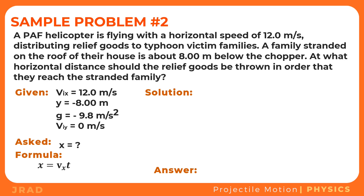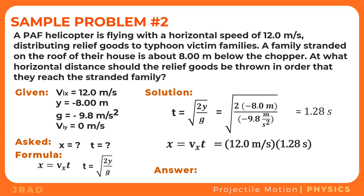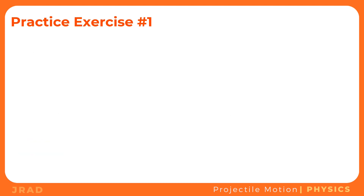To solve for x, we first need to find time using the same equation from sample problem one: t equals the square root of 2y over g. Substituting the values — square root of 2 times negative 8 meters over negative 9.8 m/s² — gives t equals 1.28 seconds. Now substituting into x equals vx·t: 12 m/s times 1.28 s equals 15 meters. The relief goods should be thrown at a horizontal distance of 15 meters to reach the stranded family.